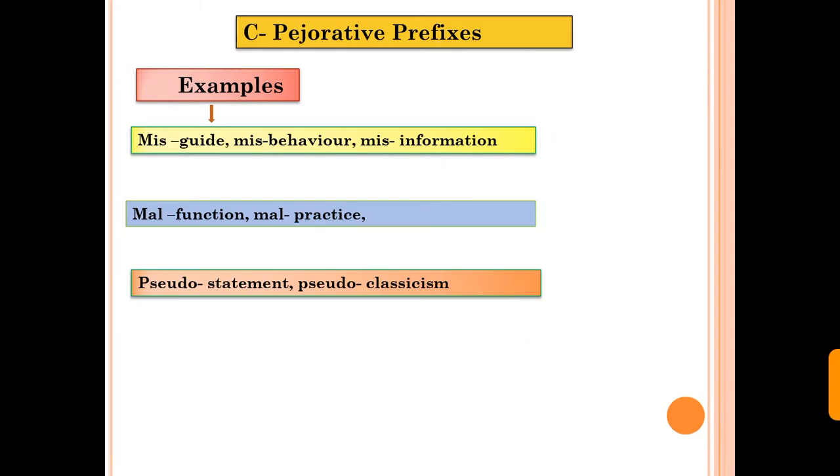The next type is pejorative prefixes. Pejorative means wrong. We show the wrong meaning. Miss, mal, and pseudo. These are pejorative prefixes. Here are the examples: guide, misguide, function, malfunction, statement, pseudo statement.